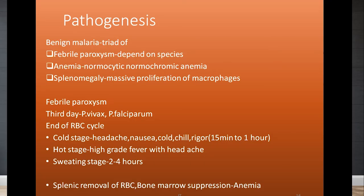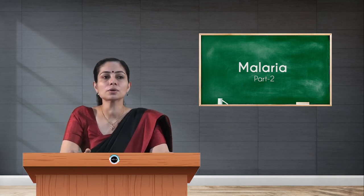The timing of febrile paroxysm depends on the species. Anemia is the second symptom in the triad and is normocytic normochromic anemia. It results from splenic removal of both infected and non-infected RBCs and bone marrow suppression, which reduces the formation of new RBCs. Splenomegaly is caused by massive proliferation of macrophages in the spleen.